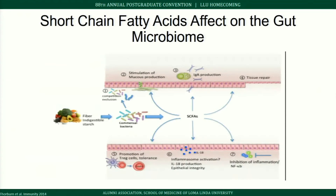To understand the gut microbiome's association with autoimmune disease, we must first discuss short-chain fatty acids — fatty acids with six carbons. Short-chain fatty acids stimulate mucus production, IgA production, and tissue repair in the gut. To generate them, you must eat dietary fiber, which is underappreciated in America. Dietary fiber interacts with gut microbiota through a series of biochemical pathways to generate three key short-chain fatty acids: acetate, butyrate, and propionate.